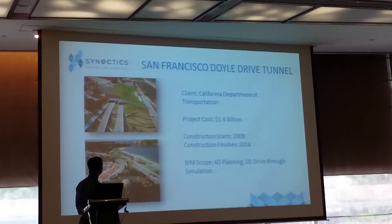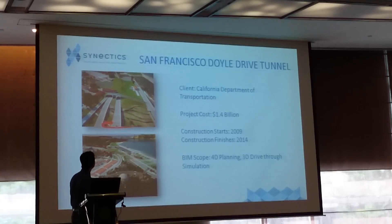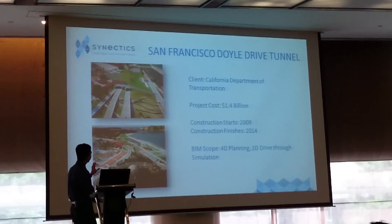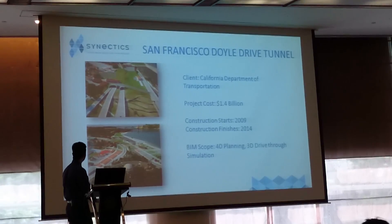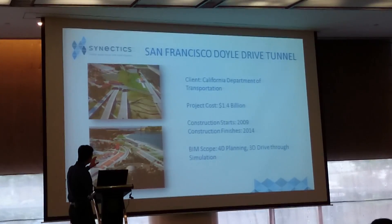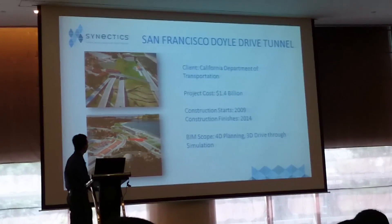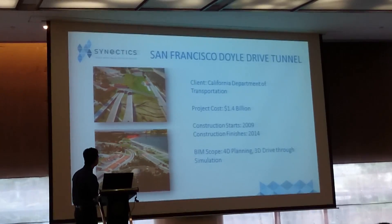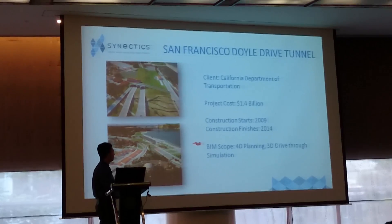Another big project that just got completed in San Francisco about a year ago was a dual-drive tunnel project. This is the Golden Gate Bridge, and right here is where an existing highway connects the Golden Gate Bridge to San Francisco. That old highway is really old — about a hundred years old. The government pushed for building a new tunnel that is earthquake-safe and will take people faster from downtown San Francisco to the Golden Gate Bridge. This is a one-billion-dollar project, and it took about five years to build.